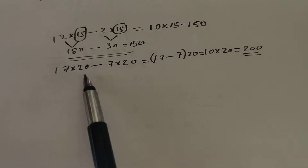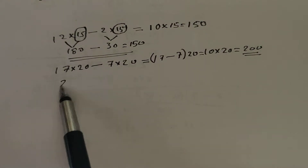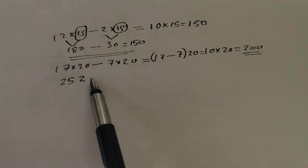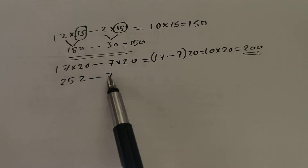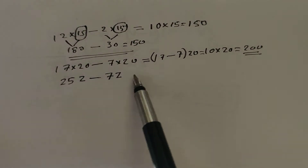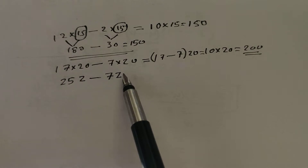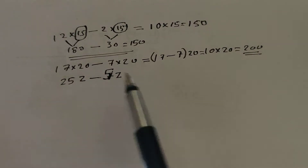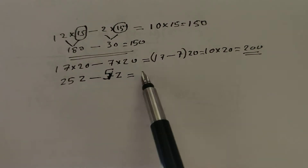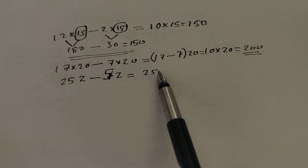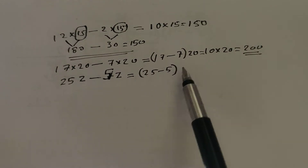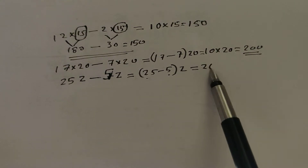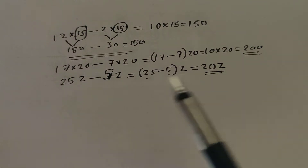We can use some algebra for this. We have 25Z. Out of 25Z, we want to subtract 5Z. Then we can calculate that is 25 minus 5, Z are there. 25 minus 5 makes 20Z. So 20Z are there.